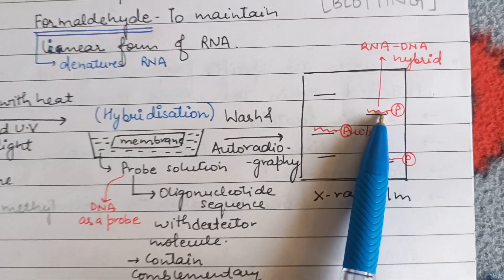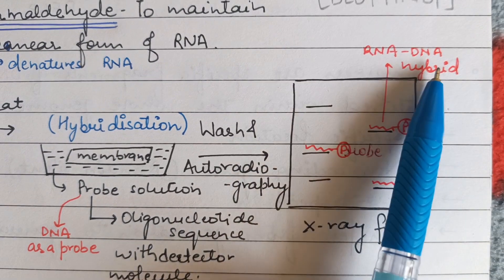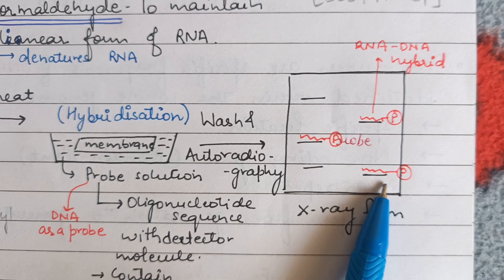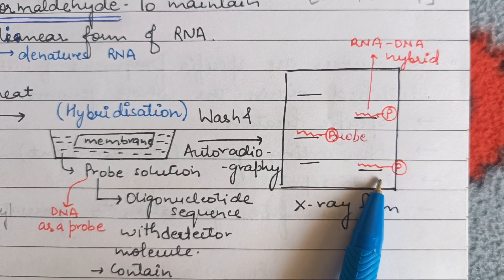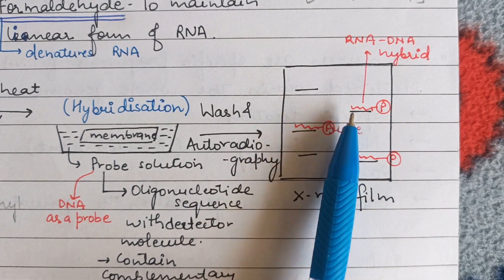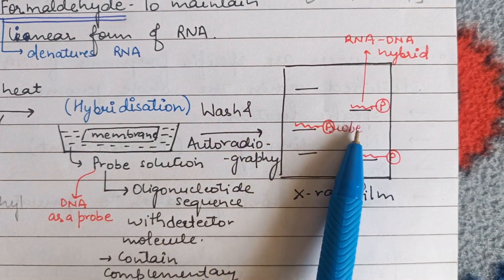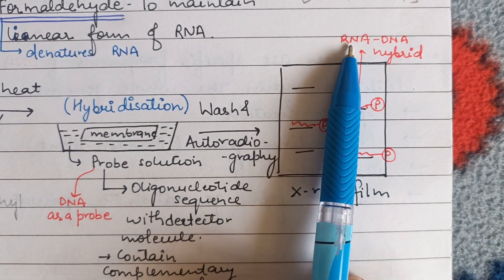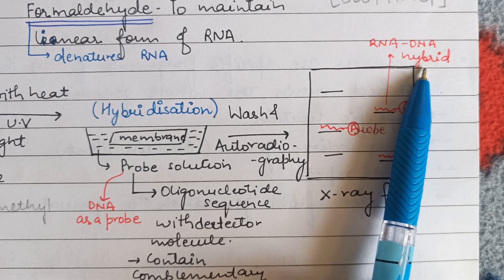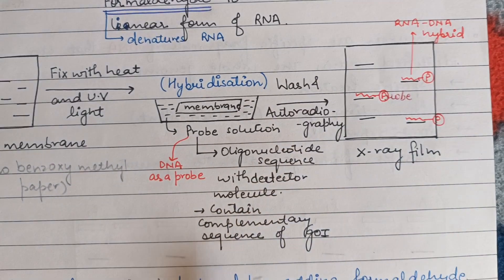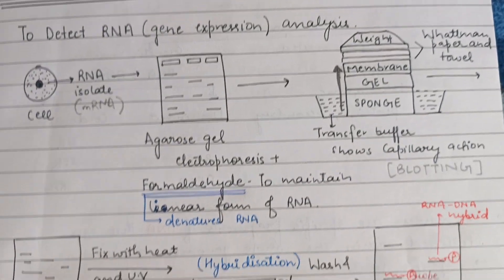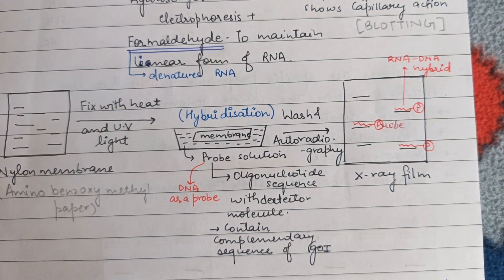After autoradiography, we observe that some RNA and probe molecules have complemented each other and formed an RNA-DNA heteroduplex — this is nucleic acid hybridization. The radio-labeled probes that have hybridized are our areas of interest, and the dark bands on the X-ray film show exactly which RNAs we need to analyze. This is how Northern Blotting detects RNA and gene expression.